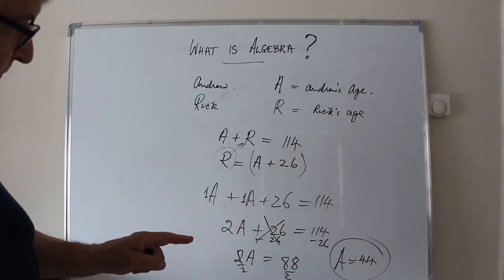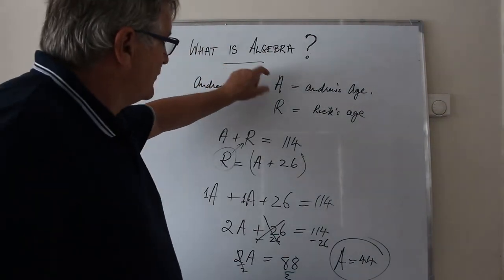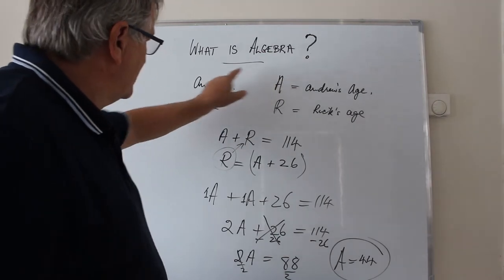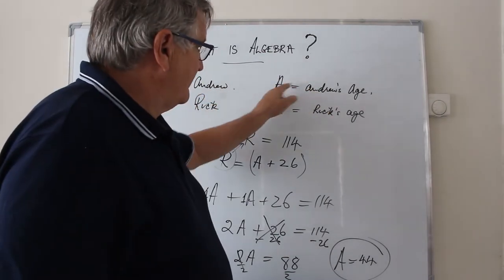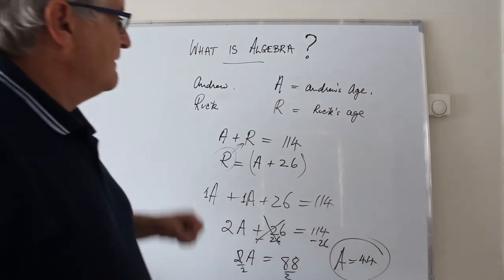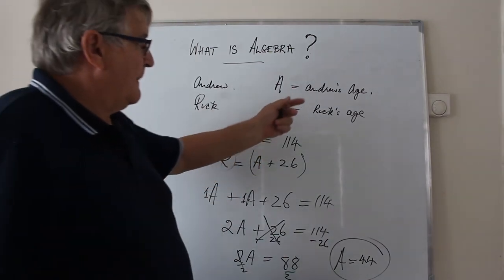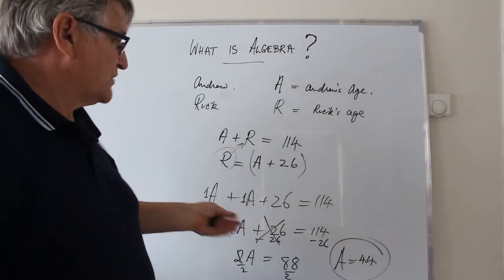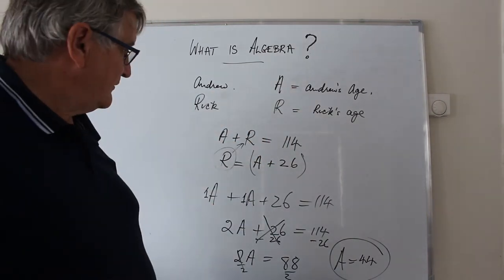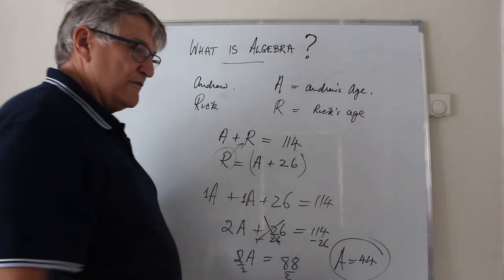So what we've done is we've used pronumerals to represent quantities. A for Andrew's age, R for Rick's age. Then instead of using a verbal expression like my age plus Andrew's age is equal to 114 years, we've said A plus R is 114.